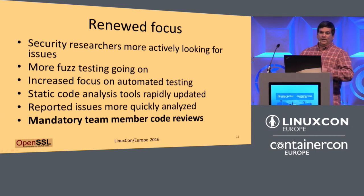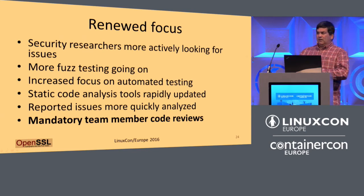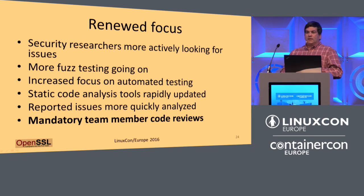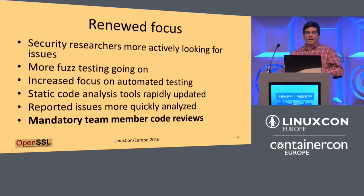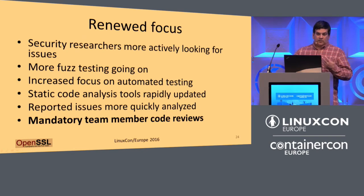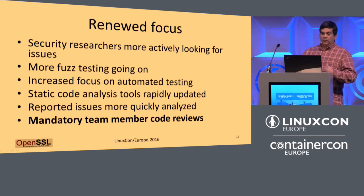The static code analysis tools — within a week of Heartbleed, everybody had upgraded to catch this kind of thing. We use Coverity as part of all of our builds and releases. Our defect density is about 0.2. Report issues are more quickly analyzed, and the biggest change is everything gets read by at least two team members. We are not where we want to be on code reviews — we could be better. Many are like 'I don't know Pearl but I trust you' or 'if IBM said the System Z Assembler is fine, good.' But we're trying to really dig in more, and that also comes from more familiarity and comfort level with each other.